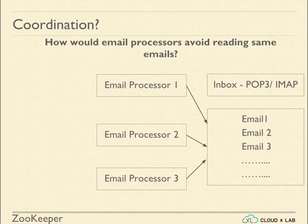Now, how would you handle the coordination between multiple indexer processes, such that every email is indexed exactly once?